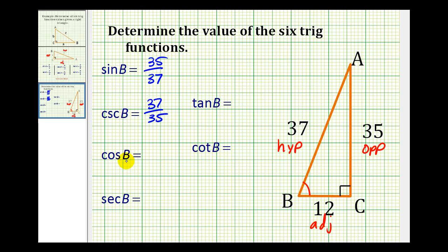Now, for the cosine of angle B, that would be the ratio of the length of the adjacent side to the length of the hypotenuse, so we'd have 12/37. Again, this doesn't simplify. The secant of angle B would be the reciprocal of the cosine of angle B, so this would be 37/12.